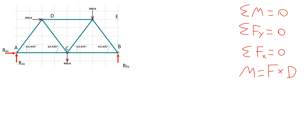We have four forces that cause a rotational force around point A. They are the 200-pound force acting at point D, the 400-pound force acting at point C, the 300-pound force acting at point E, and the reaction force at B in the y direction.